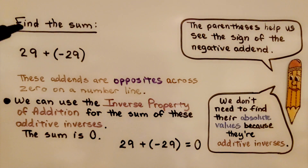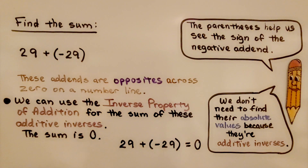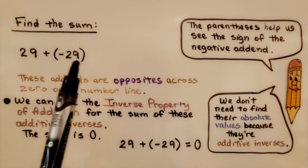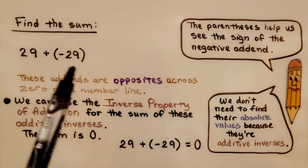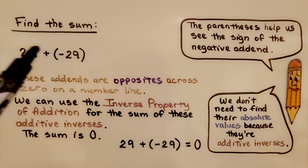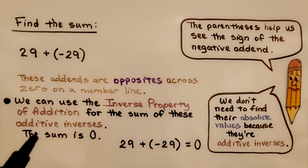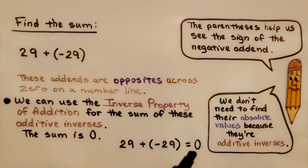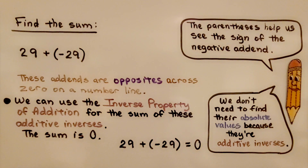It's telling us to find the sum. We have a positive 29 plus a negative 29. Remember, the parentheses help us see the sign of the negative addend. These addends are opposites across zero on a number line. We can use the inverse property of addition — the sum of these additive inverses is zero. 29 plus negative 29 is equal to zero. Remember, we don't need to find their absolute values because they're additive inverses.